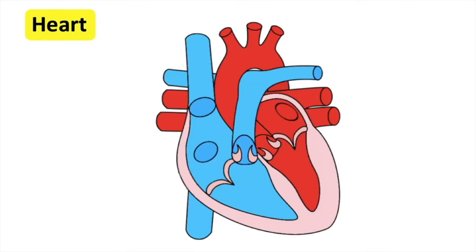The heart has four chambers. The small upper chambers are called atria and the lower chambers are called ventricles. So here: right atrium, left atrium, right ventricle, left ventricle.